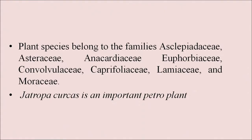Petro plants or petrocrops can be grown on land unfit for agriculture and not covered with forest. Plant species that produce substances extractable in an economically viable way are used. Plants belonging to the families Asclepiadaceae, Asteraceae, Anacardiaceae, Euphorbiaceae, Convolvulaceae, Caprifoliaceae, Lamiaceae and Moraceae are usually used.